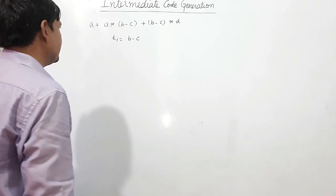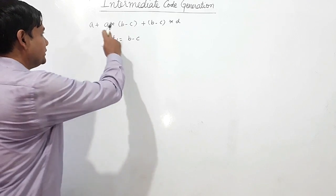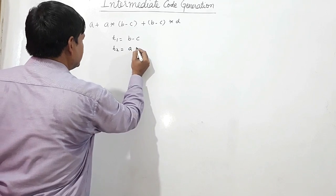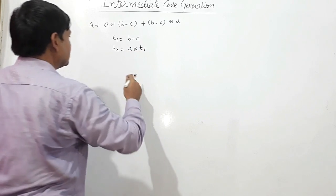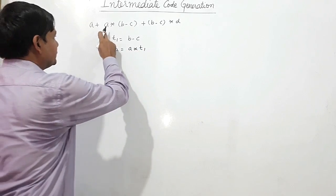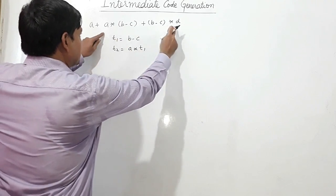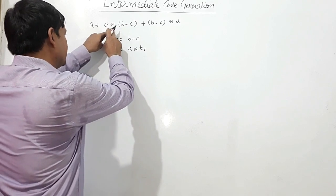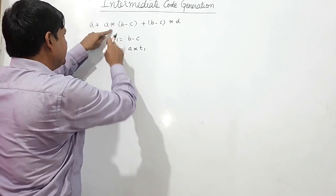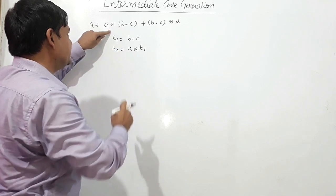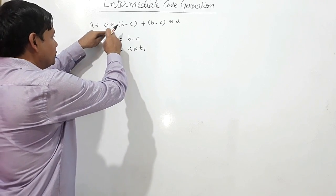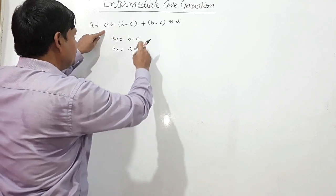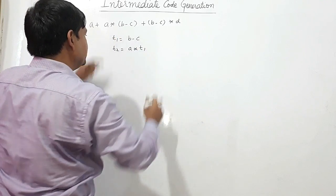Now what do we evaluate next? We evaluate a*t1, so t2 is equal to a*t1. This is evaluated because star has the same precedence but is left associative, and while scanning from left to right it comes first. So the expression is now a + t2 + t1*d.